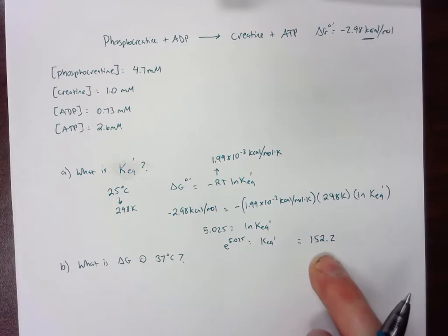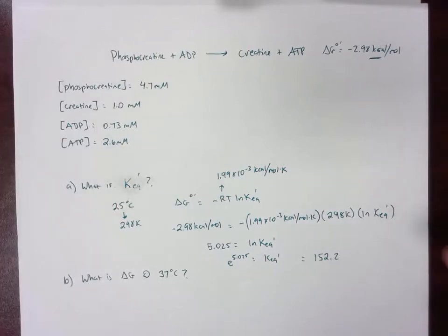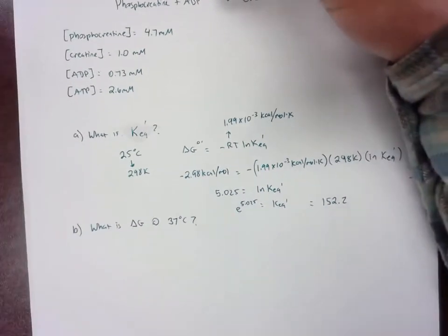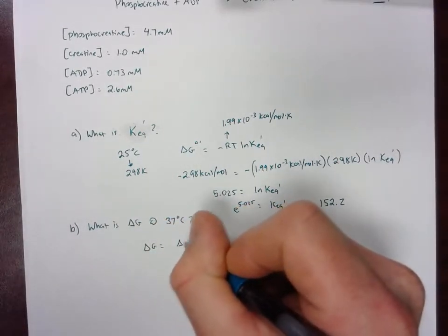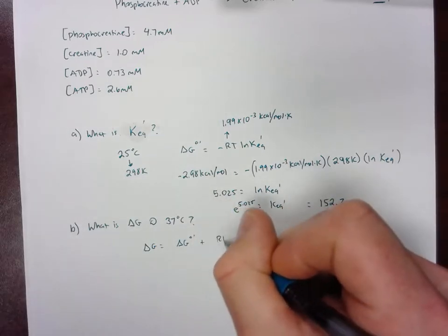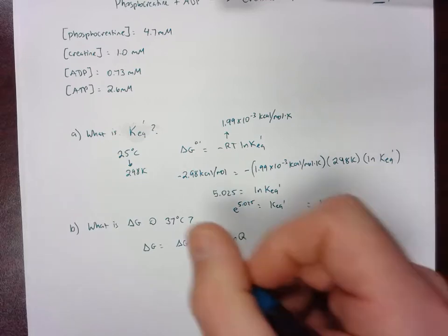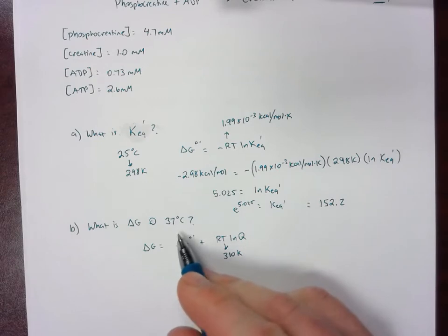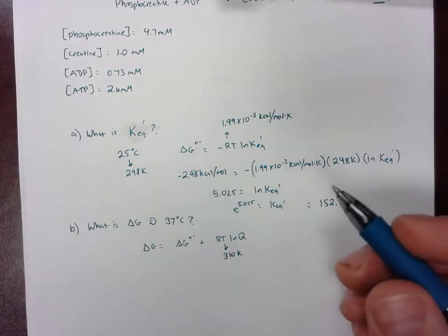You can see that the products are favored under standard conditions. So now let's do the delta G under non-standard conditions, more like conditions we would see in the cell. In order to do this, we're going to use the formula delta G equals delta G naught plus RT ln of Q. Our T is different in this case. It's actually going to be 310 Kelvin because we're under the conditions of bodily function, which would be 37 degrees Celsius.